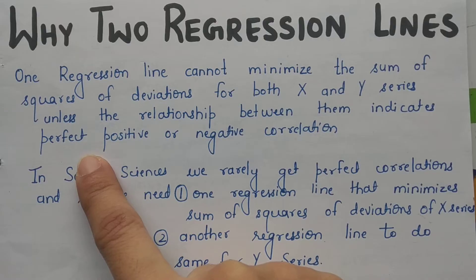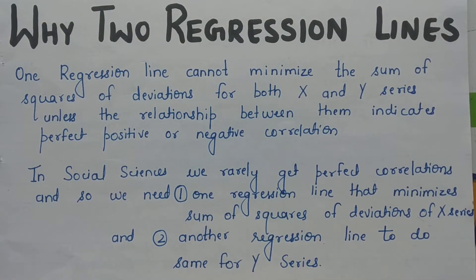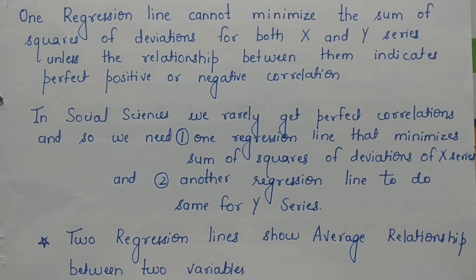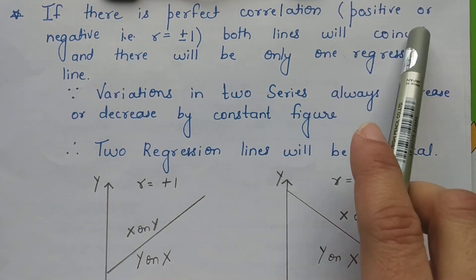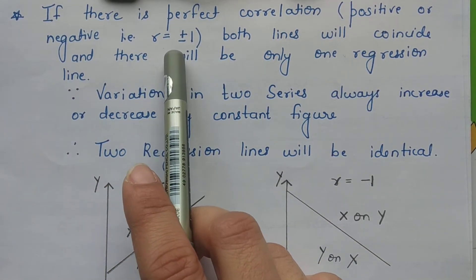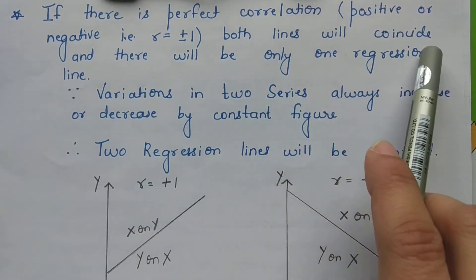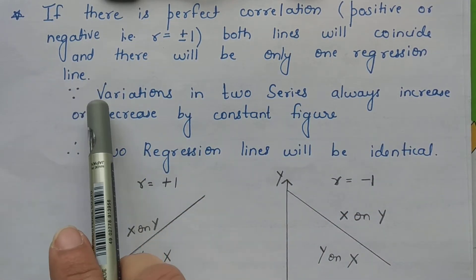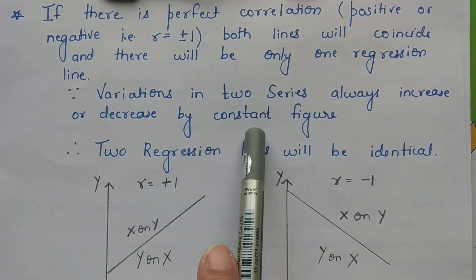If there is perfect positive or perfect negative correlation between two variables, then we need only one regression line. If there is perfect correlation, whether positive or negative — if r equals plus one or minus one — then the two regression lines coincide and there will be only one regression line, because variations in the two series always increase or decrease by a constant figure.